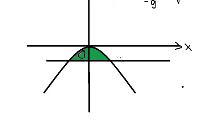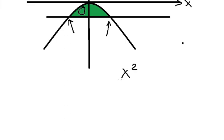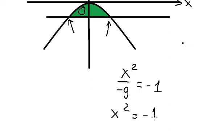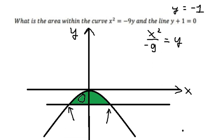In this situation we need to find the intersection of the curve and the line. So we set x squared over negative nine equal to negative one. Multiply both sides by negative nine — we get positive nine. Taking the square root of both sides, we have two solutions: x equal to three and x equal to negative three. So the intersections are at negative three and positive three.